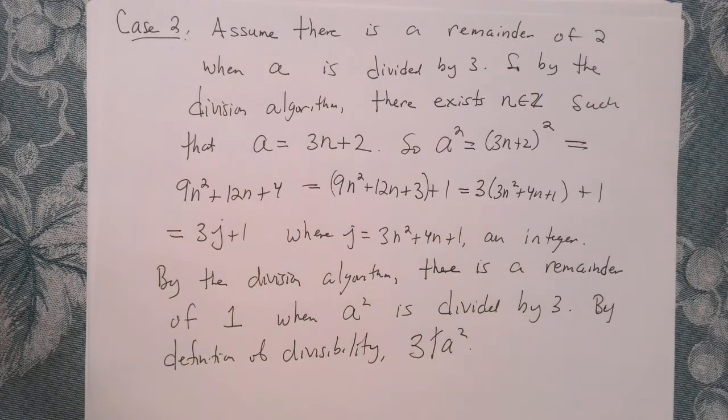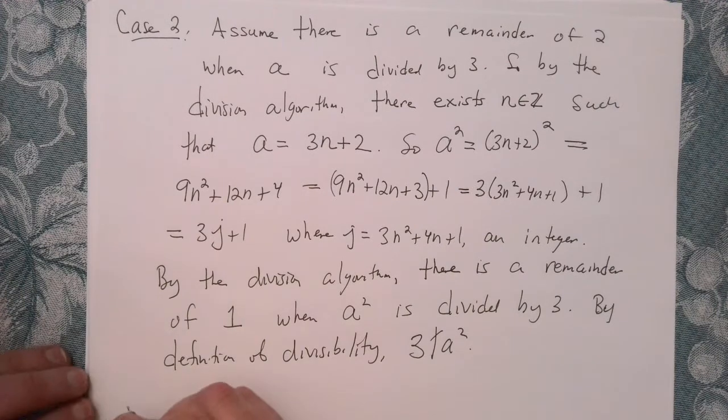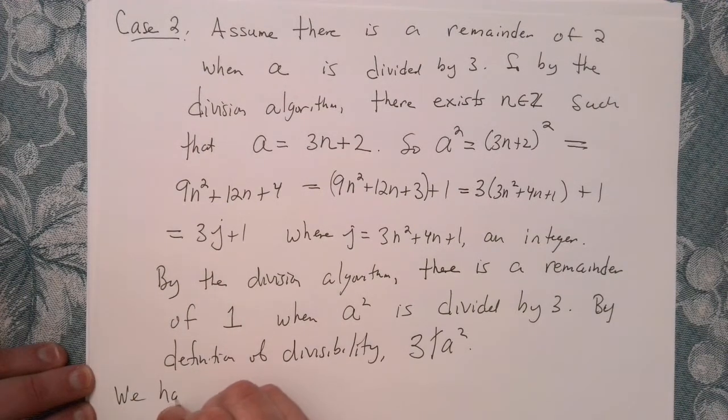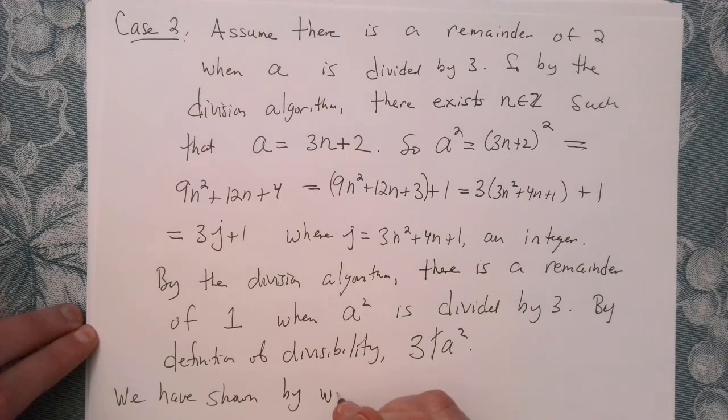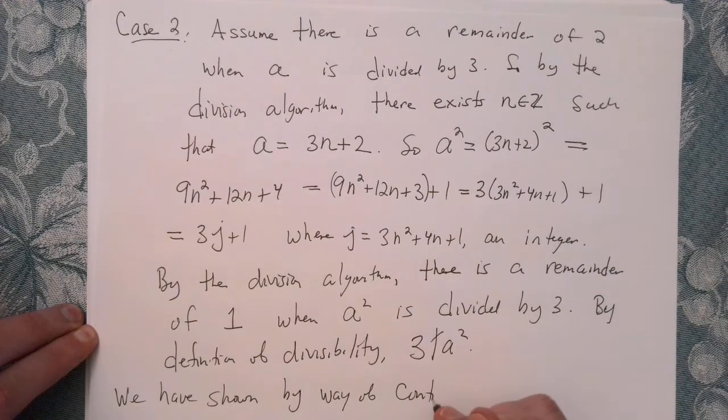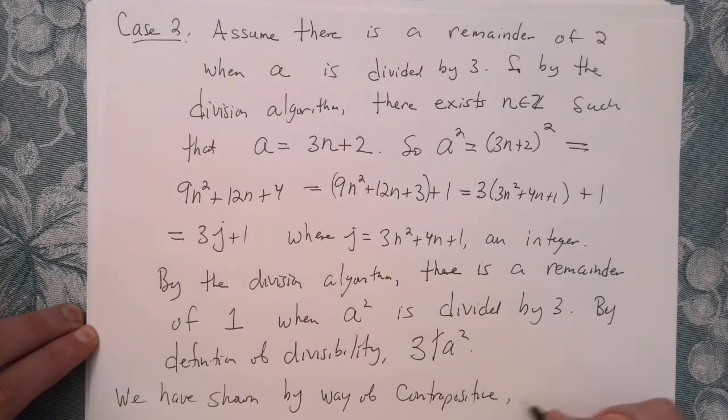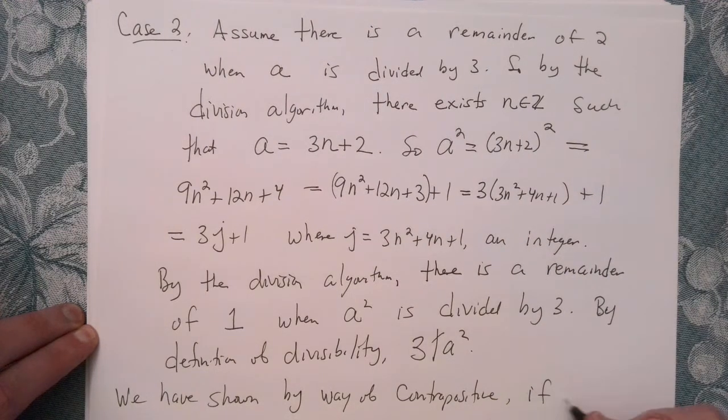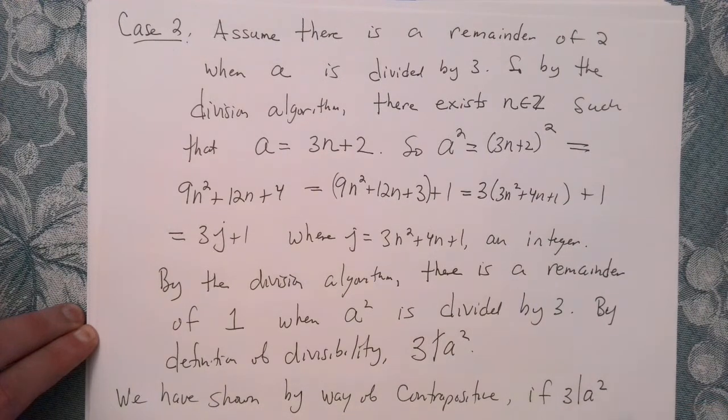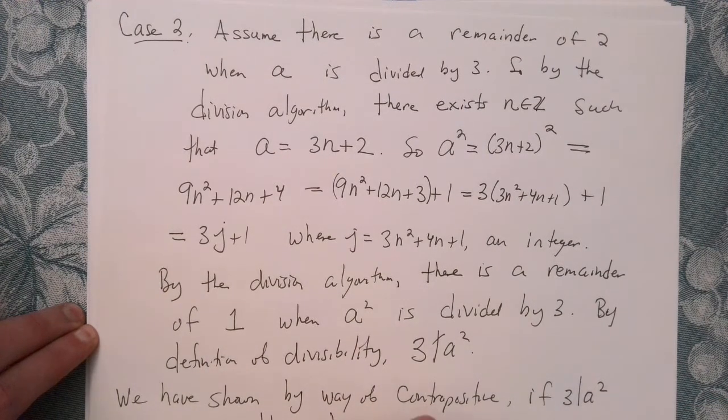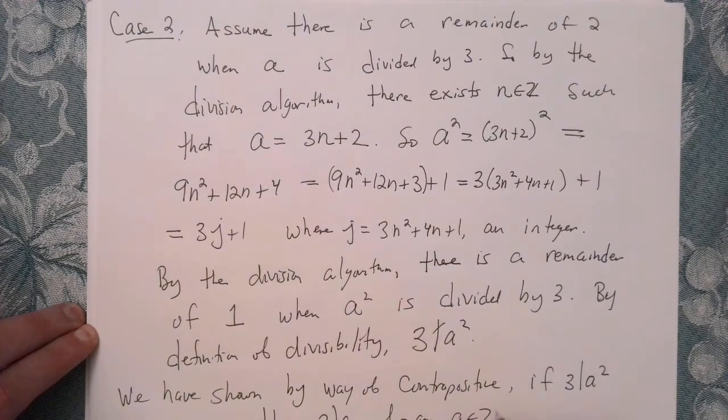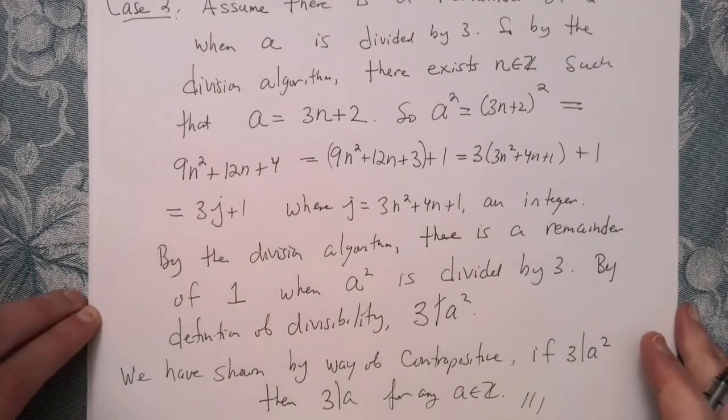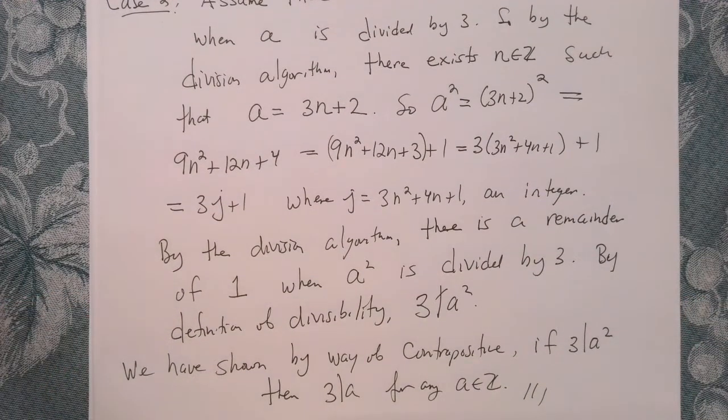Okay, so we've exhausted all of the cases and so we have shown by way of contrapositive: if 3 divides a squared, then 3 divides a, for any integer a. Okay, and that concludes the proof. Okay, we're going to end up using that in the next video so stay tuned.